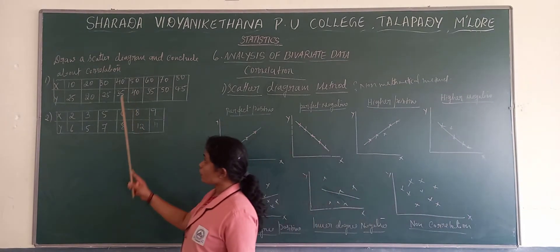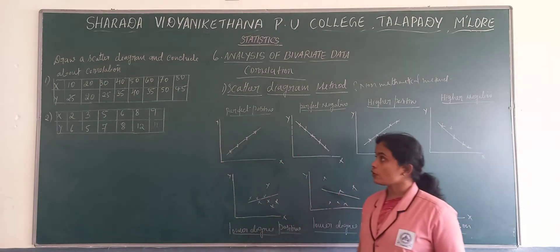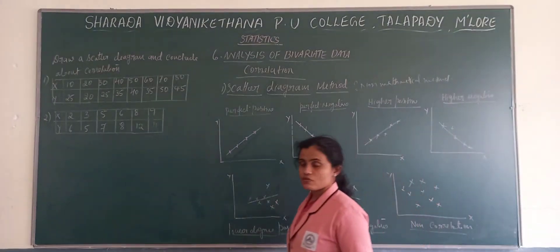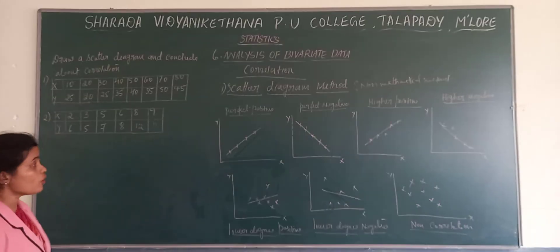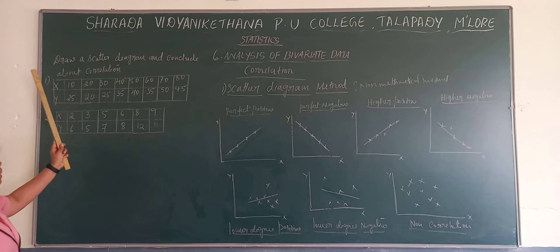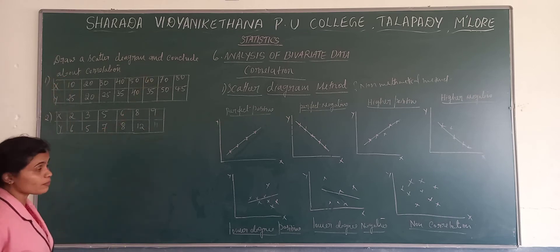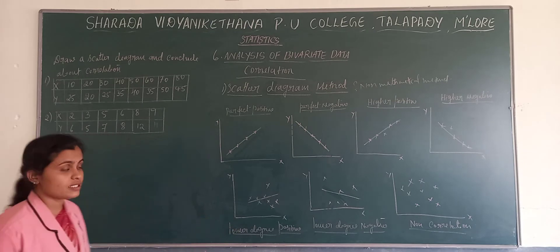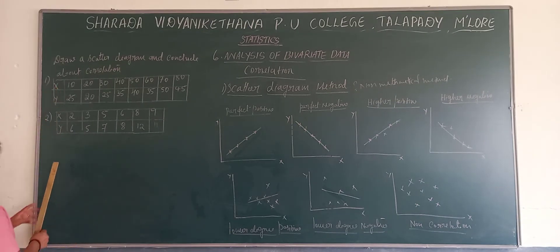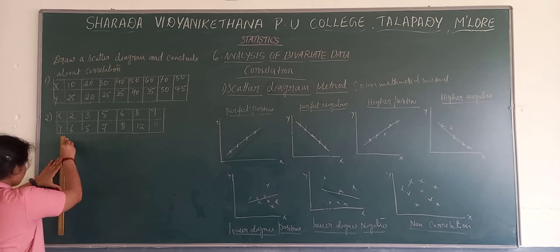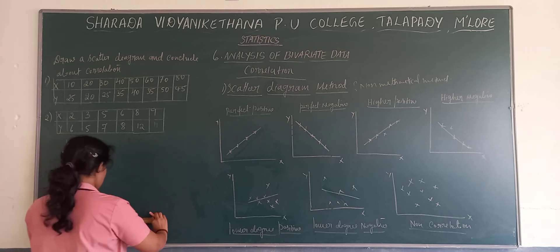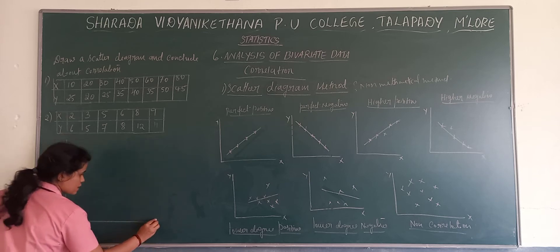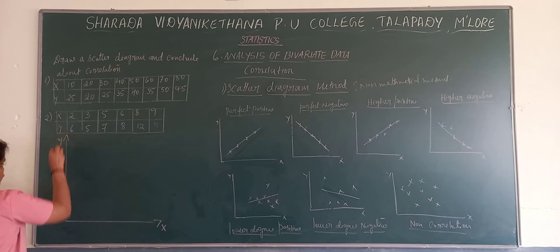We have two problems to solve. We will see the scatter diagram for these two problems, and by looking at this we can name which kind of scatter diagram we are going to get. The question says to draw the scatter diagram and conclude about correlation — that means we need to write which kind of scatter diagram it is. For the first problem, we have x and y values. First, we draw the x-axis and y-axis.